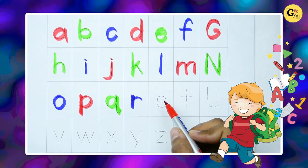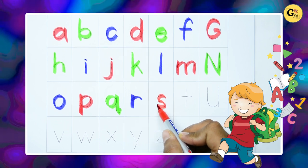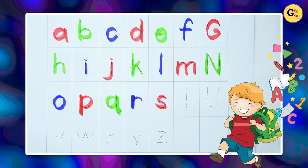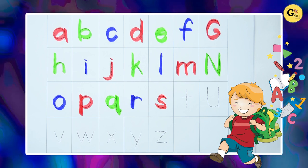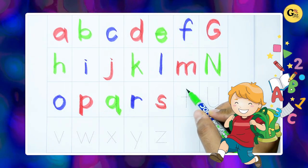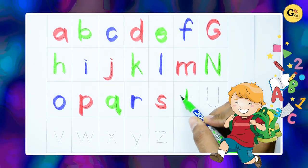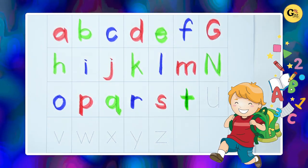Now it's S, small s. S for sun. T, T for tiger. Yes, T for tiger.